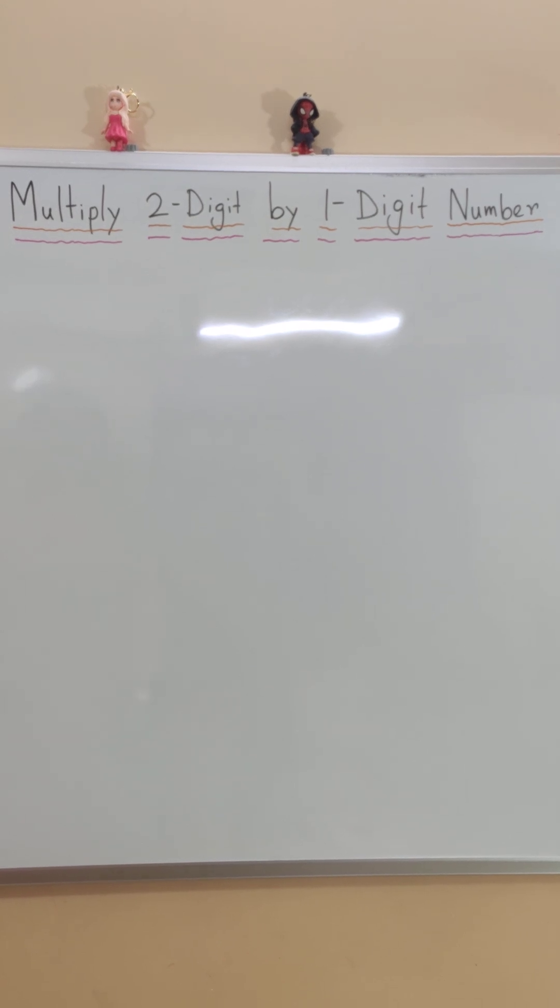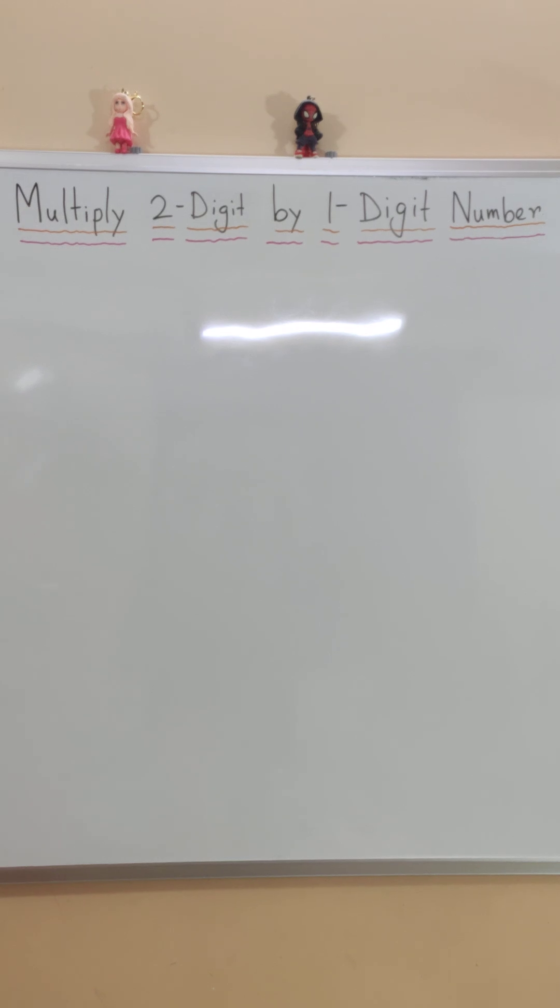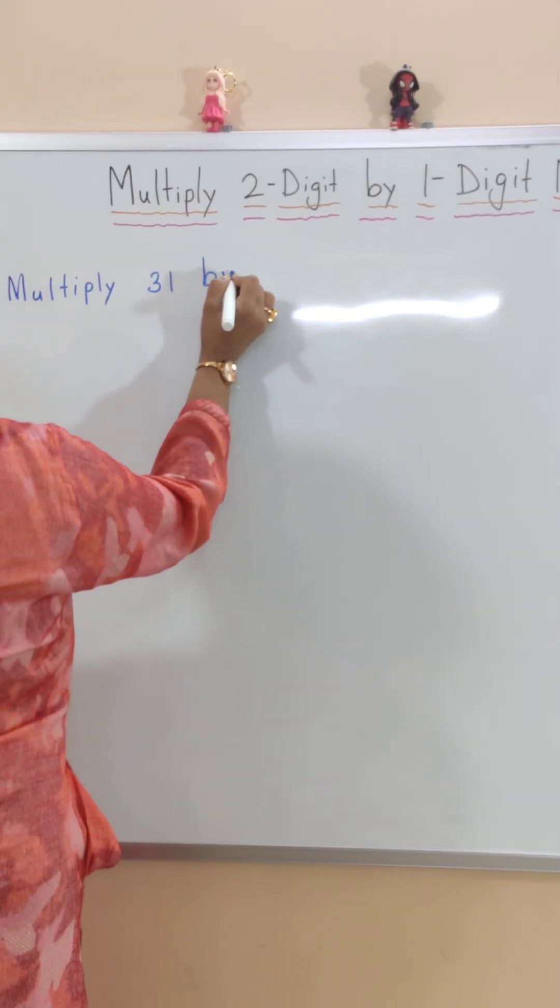Today we will learn to multiply a two-digit number by a one-digit number. Let me show you an example. Multiply 31 by 2.